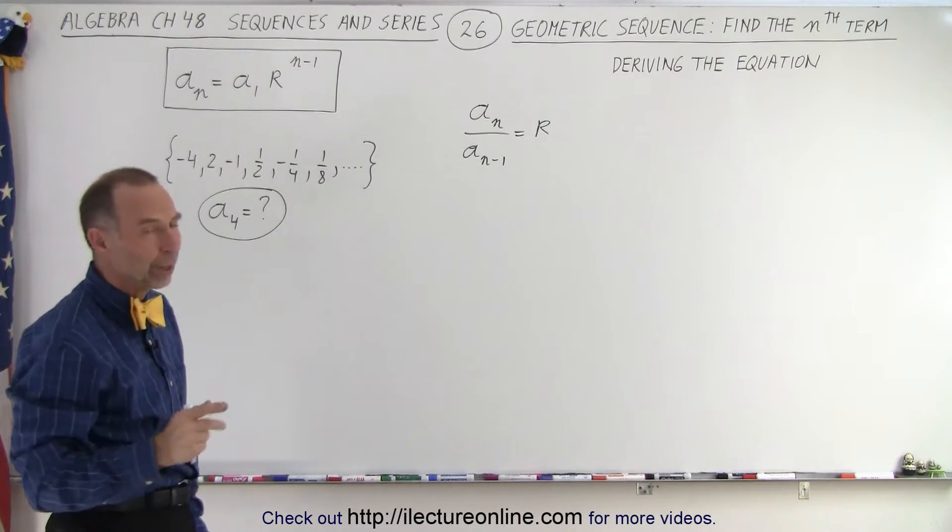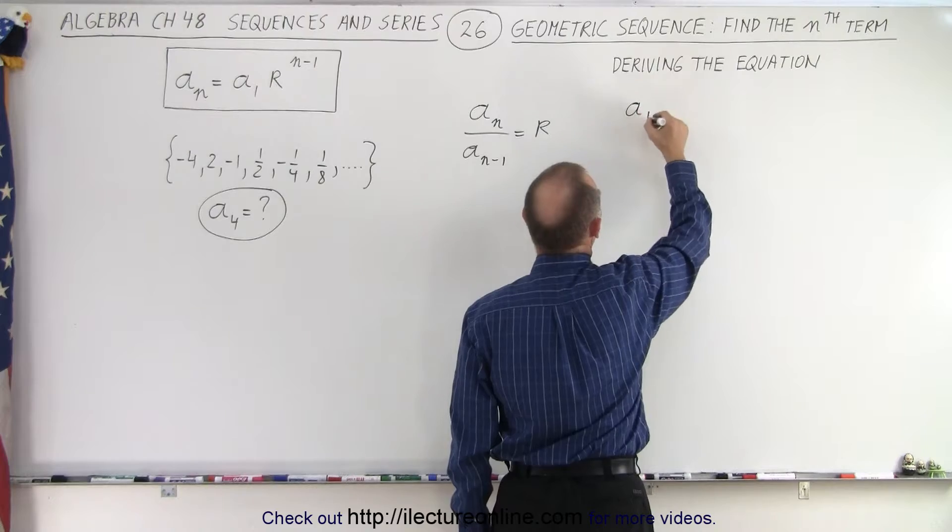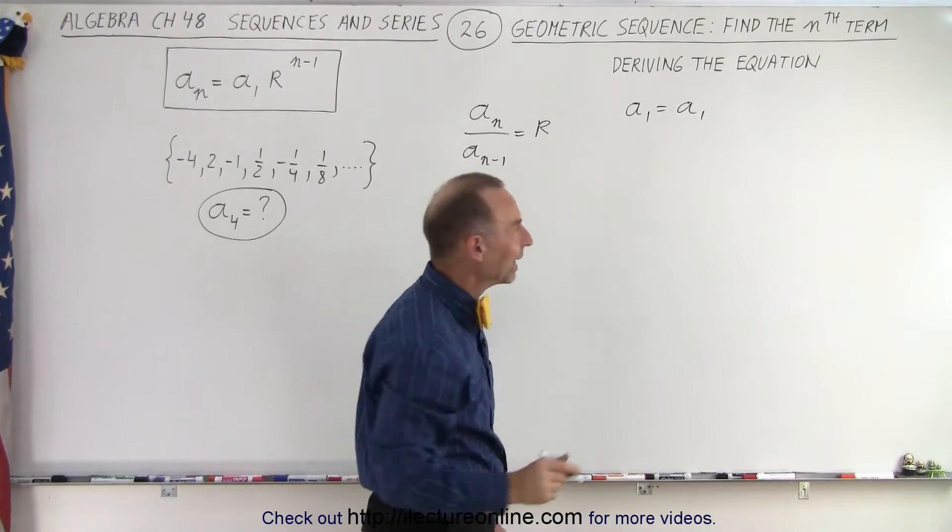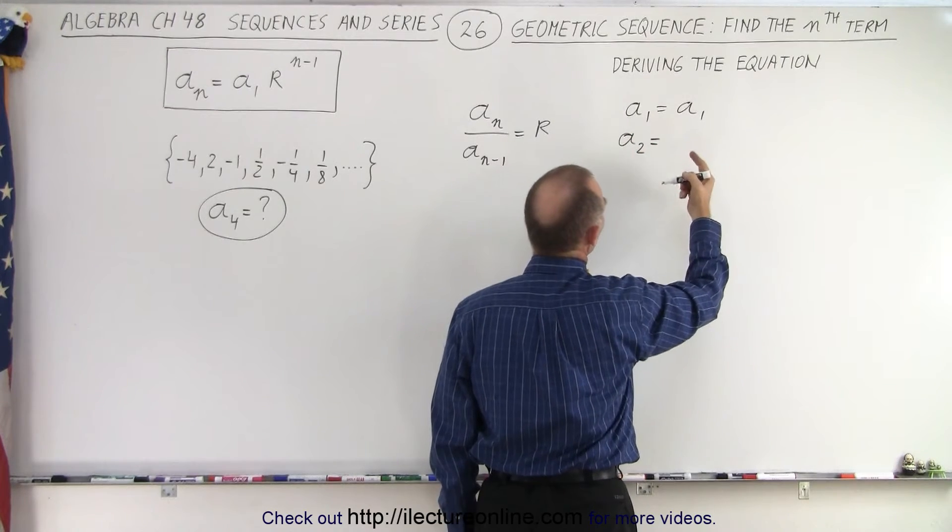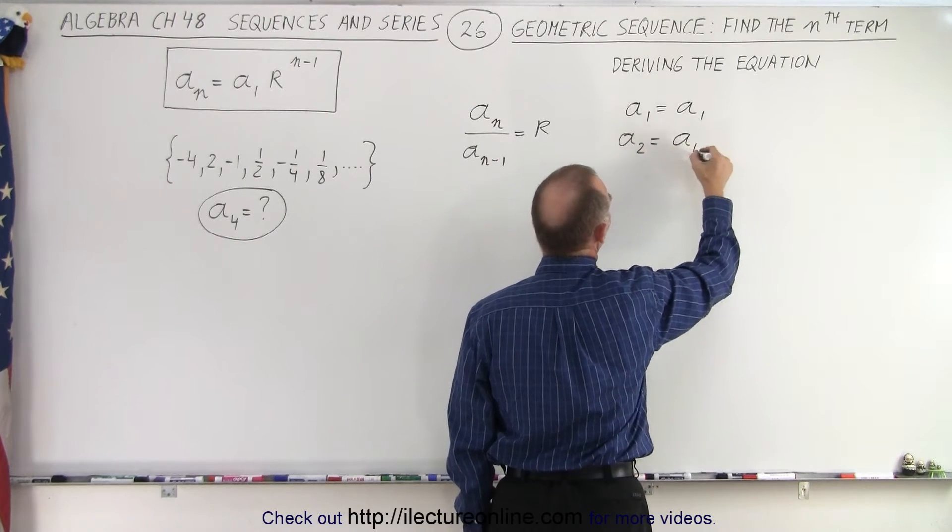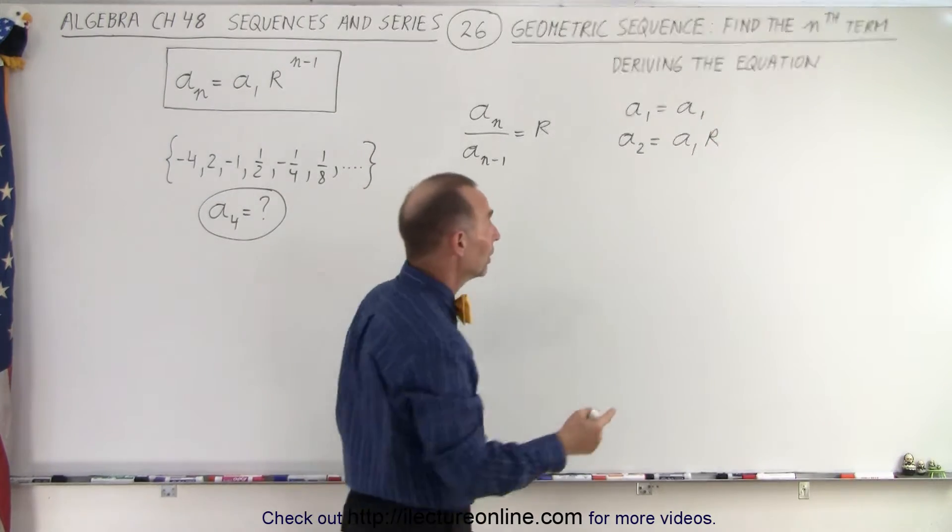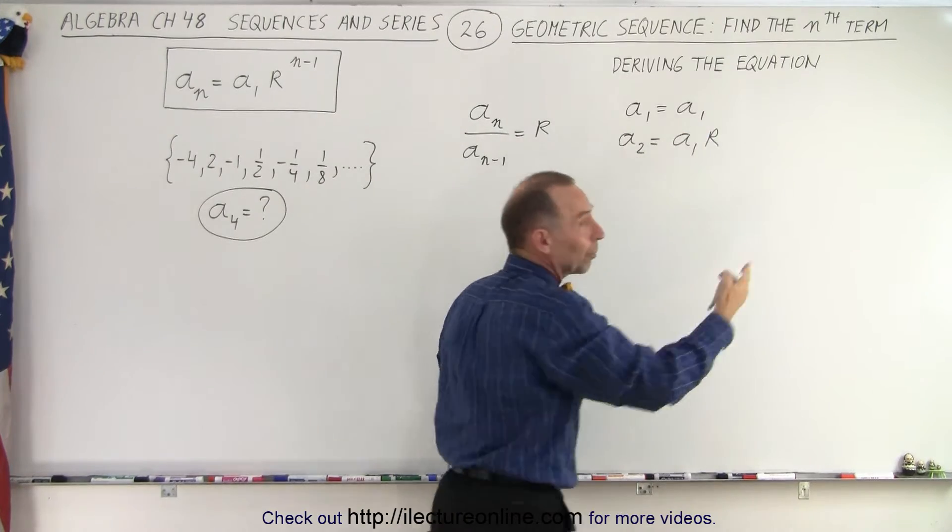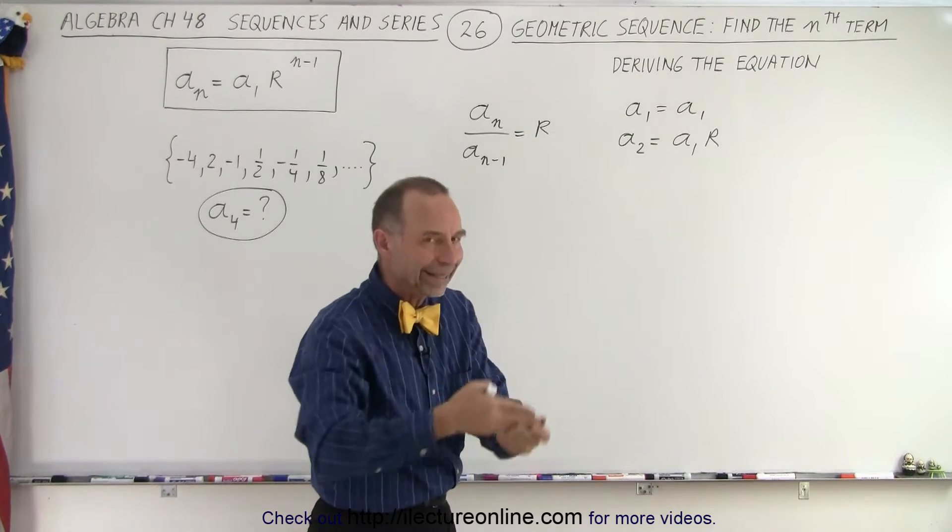But again, where did that equation come from? Well this is how it's done. First of all we can say that a_1 is equal to a_1. That's simple enough. But what about a_2? The second term in the sequence is going to be equal to a_1 times the common ratio. So if the common ratio is 2 and the first number is 1, then 1 times 2 gives you the second number because you have to multiply the number before times the common ratio to get the next number.